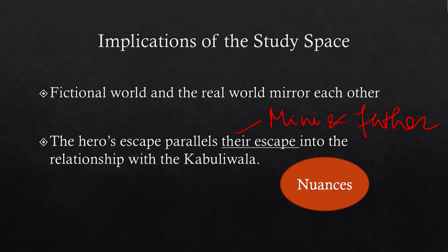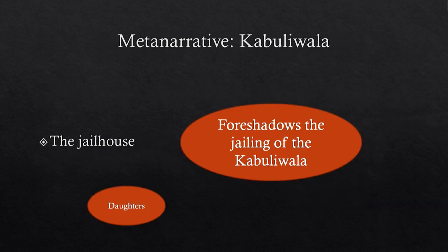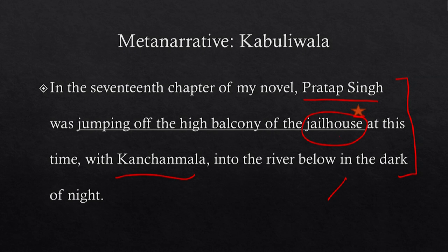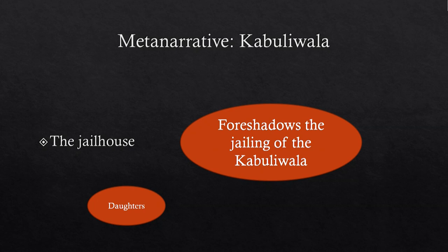The mother has her own suspicions about the stranger figure, so the Kabuliwala affects not only Minnie and her father but other characters too. The reference to the jailhouse in the meta-narrative is very interesting — I would suggest it foreshadows the jailing of the Kabuliwala for a grievous crime at the high point of the story. This crime takes him away from the daughters in the story: Minnie and the Kabuliwala's own biological daughter, whom we hear about at the ending.